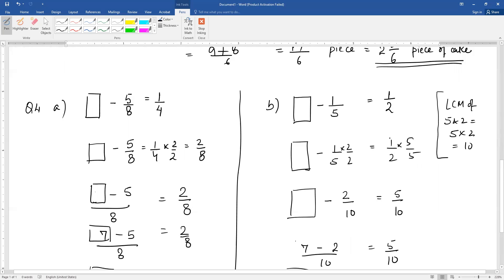Similarly, on the right hand side, 1 by 2. We will multiply by 5 in both numerator and denominator, then we get 5 by 10. 1 by 2 equivalent fraction is 5 by 10. We need 10 as the denominator.